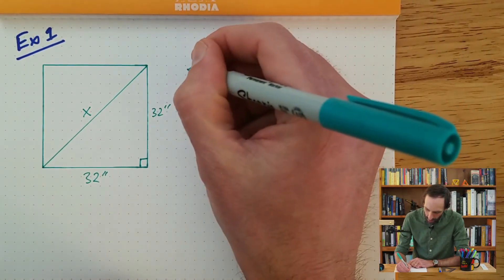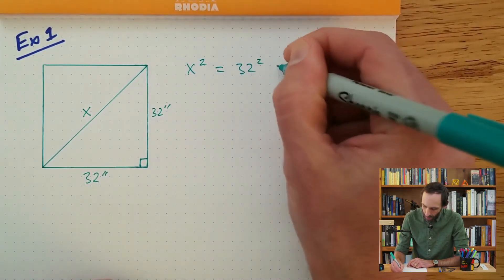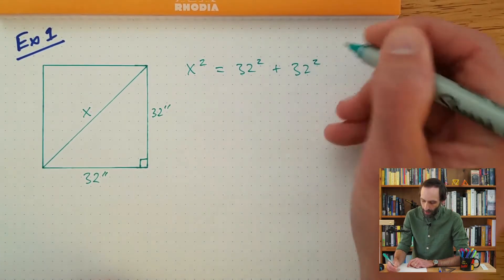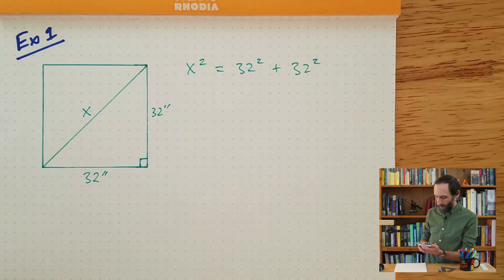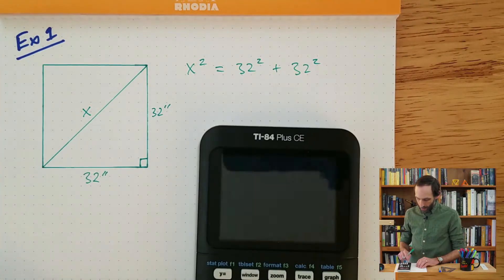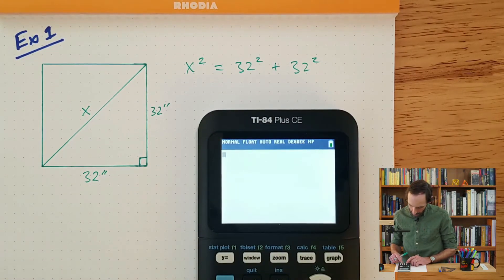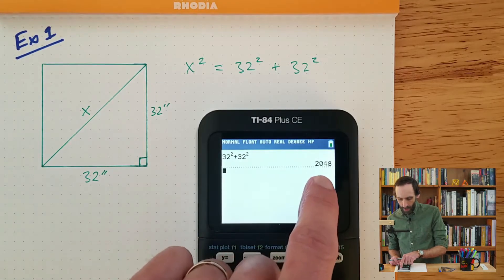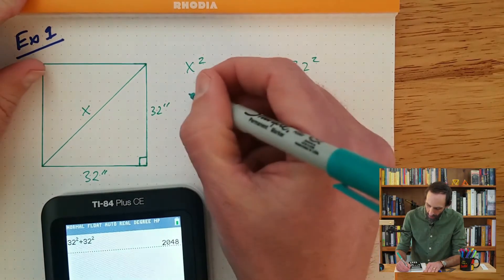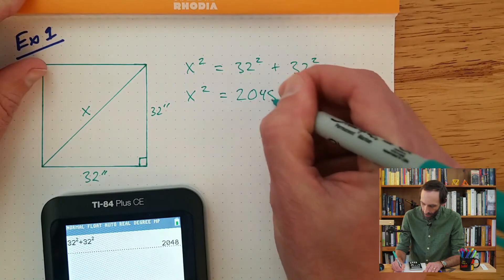So we can set up the equation: x squared is equal to 32 squared plus 32 squared. Now we're going to go ahead and pull out the calculator — when you're doing these types of problems you're probably going to be using the calculator pretty frequently. So let's go ahead and take 32 squared plus 32 squared. We get 2048. So x squared is equal to 2048.